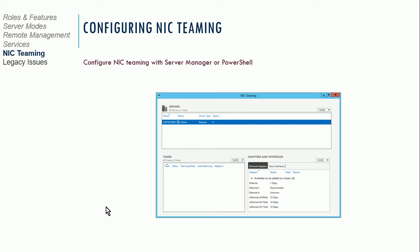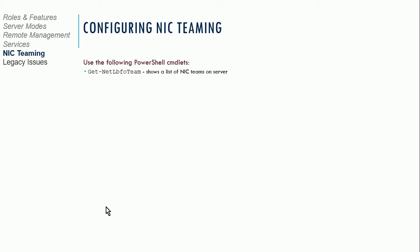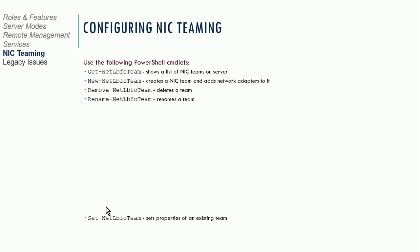To configure NIC teaming, you can open up Server Manager, which has a GUI interface you can use to configure NIC teaming. Or you can use a cmdlet in PowerShell. There are some commands I'm showing on the screen now that you can use to create and manage teamed NICs. Basically, a team NIC is a group of NICs, so you have to indicate which network interface cards you're including in a team.